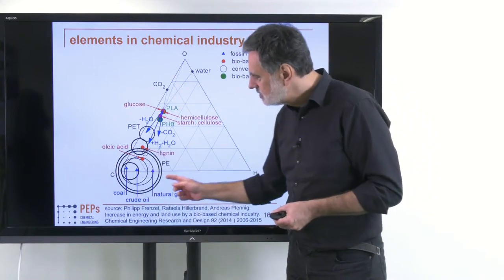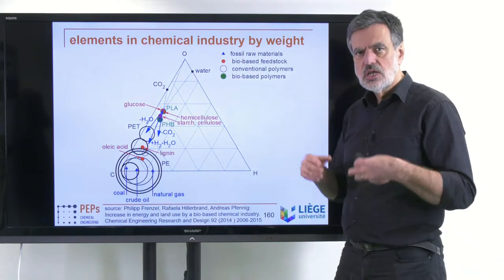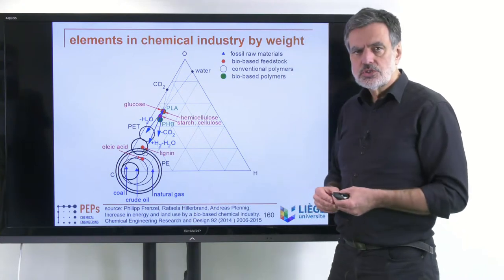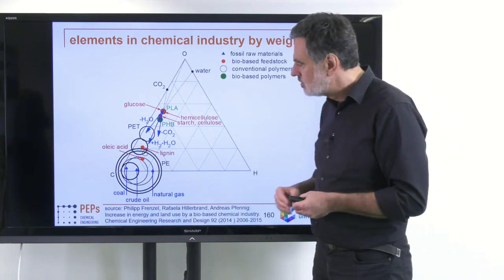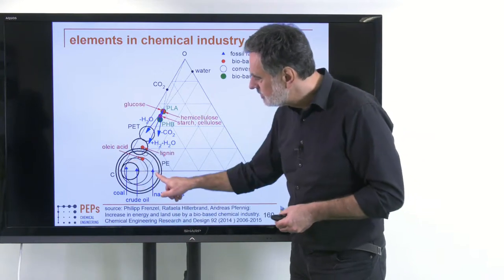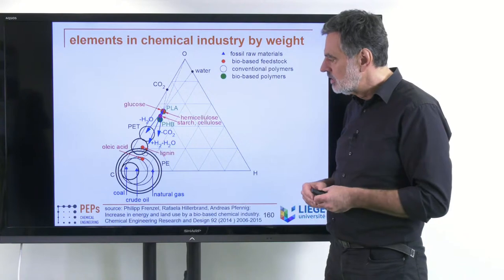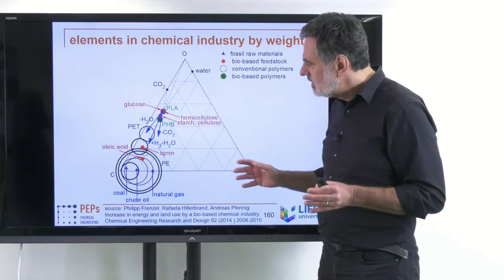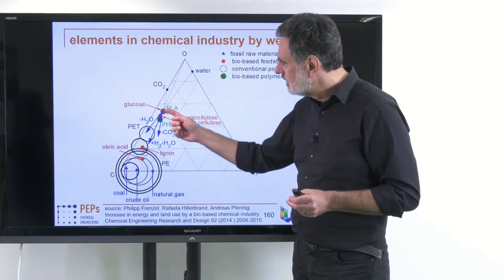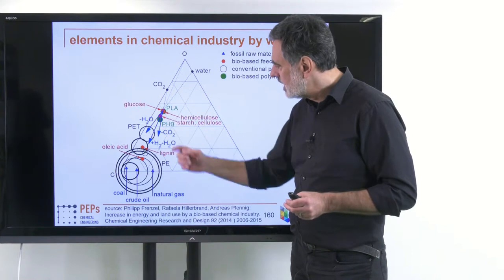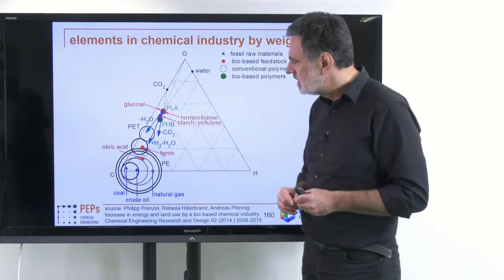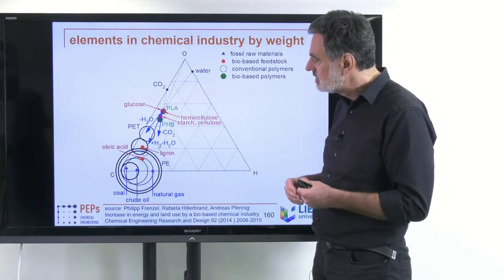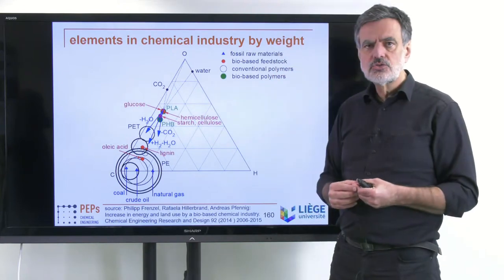The chemical products — shown as large circles, mostly polymers, where the size corresponds to global production rate — fit quite nicely to the current fossil feedstock in the chemical industry. On the other hand, the bio-based feedstock — starch, cellulose, sugar, hemicellulose, lignin, and oleic acid as an example of a plant oil product — contain significantly higher amounts of oxygen.